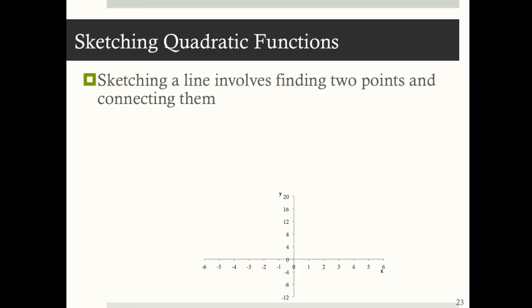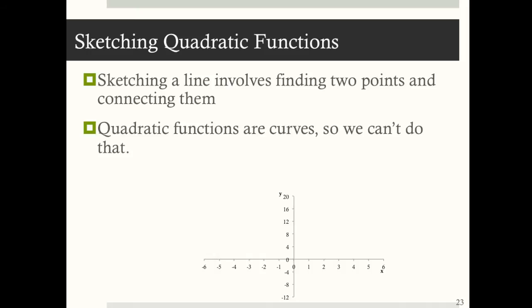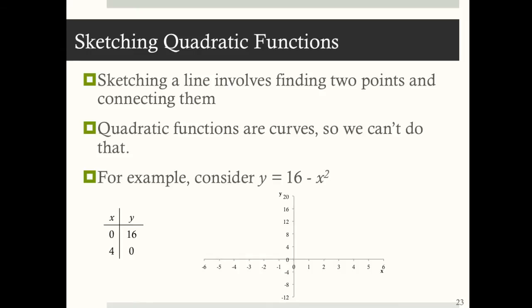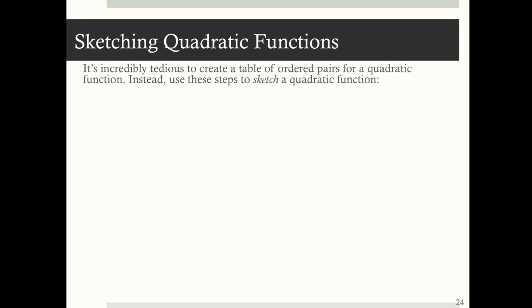We know that sketching a straight line involves finding just two points and connecting them. But quadratic functions are curves — they're non-linear — so we can't actually do that. For example, suppose you're given y is equal to 16 minus x squared. You might find two points — when x is zero, y is 16, and one solution for y is zero — and draw a straight line through them. But if you were to create a big table of ordered pairs and connect the dots, you would find that the actual shape of this graph looks like a parabola. It's incredibly tedious to create a table of ordered pairs for any non-linear function.